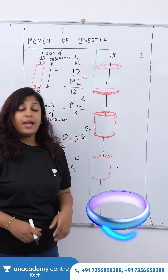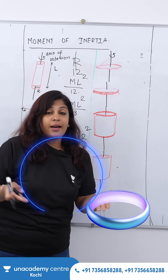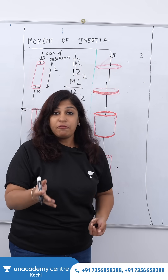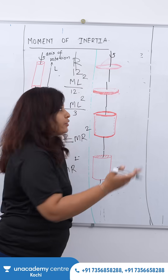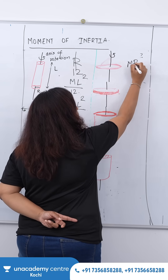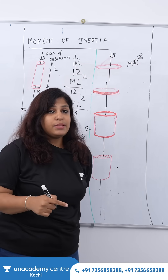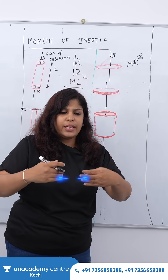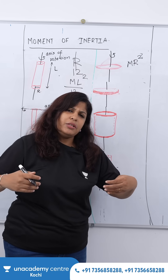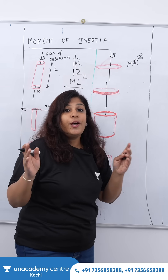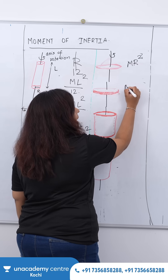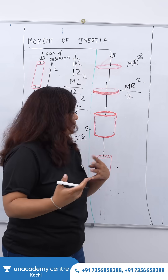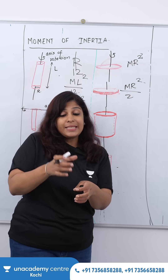Next you have a ring. All the masses are situated at the same distance from the axis of rotation, so the moment of inertia is mr². For a disc, masses are distributed from the axis out to the circumference, so the moment of inertia is mr² / 2 — less than that of the ring.